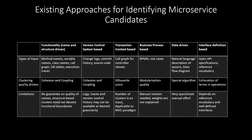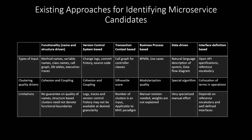People have studied this problem from various lenses and we have listed the main ones on the slide. The most important and perhaps the most intuitive way is trying to understand the functional decomposition of the monolith application by using names — method names, variable names, or class names. They typically encode the functional intent of the application, and if we can group the names that are similar, we can come up with clusters of functionality present in the application.